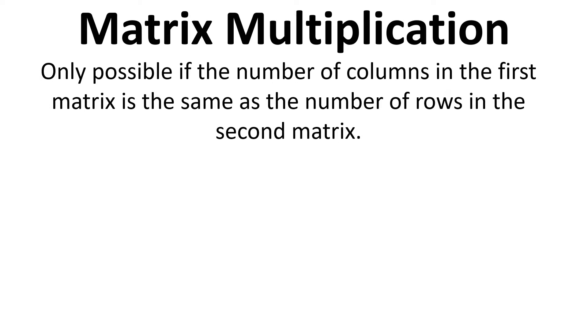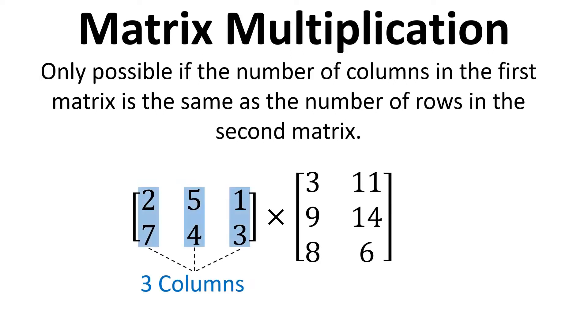So in order to multiply two matrices together, it's only possible if the number of columns in the first matrix is the same as the number of rows in the second matrix. So if we take this example here, we've got three columns in the first matrix and three rows in the second one, so it's possible to multiply these together.